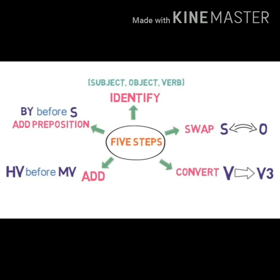There are five simple steps to convert active into passive voice. Step one: identify the subject, object, and verb. Step two: swap the object with the subject and the subject with the object — change the subject into object and object into subject. Step three: convert the main verb into its third form (V3). Only the third form of the verb is used in passive voice.